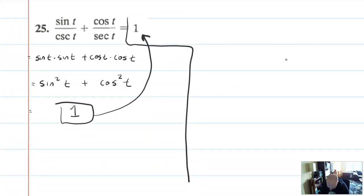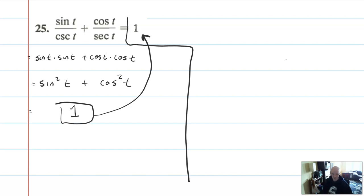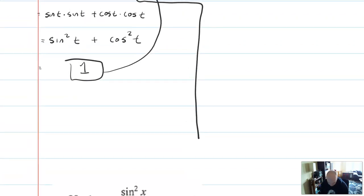Another approach would be using a common denominator of cosecant times secant. I suspect that would work out as well — you get a lot of things to cancel by adding factors to make a denominator, which makes the problem more complicated. So it can be nice to see if each fraction will simplify on its own first before doing that.